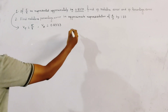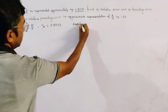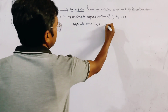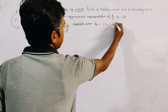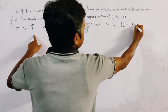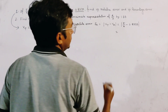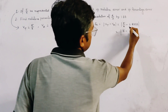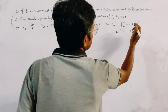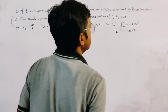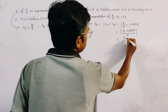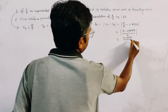We know that absolute error Ea is given by the modulus of Vt minus Va, and this is equal to |5/6 − 0.8333|. This gives us (5 − 4.9998)/6, which simplifies to 0.0002/6.